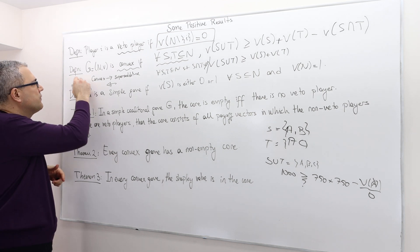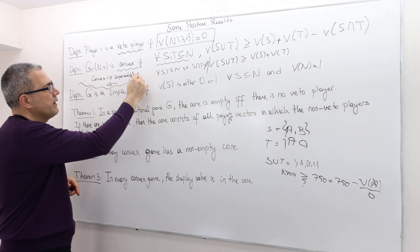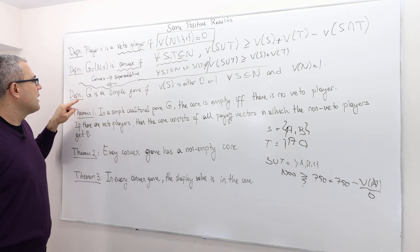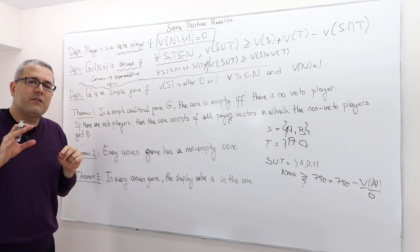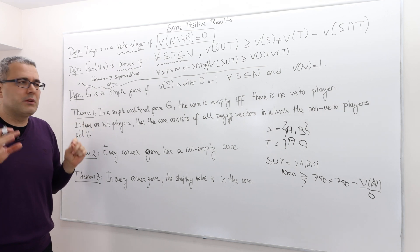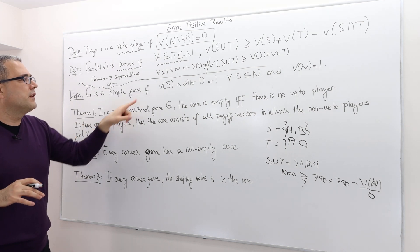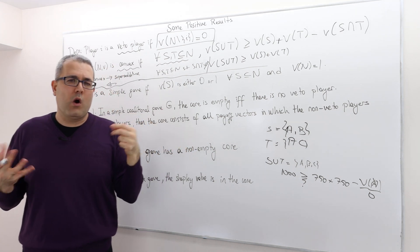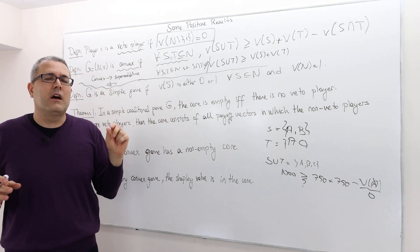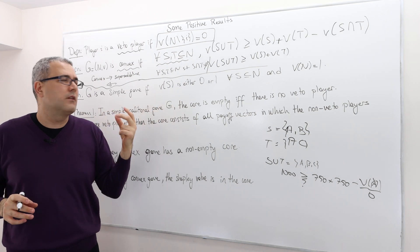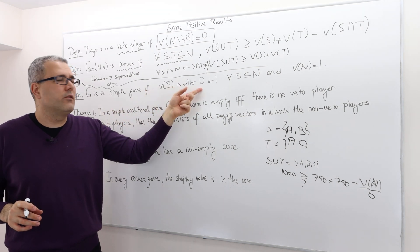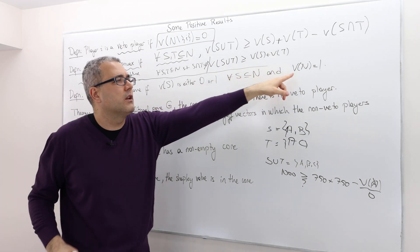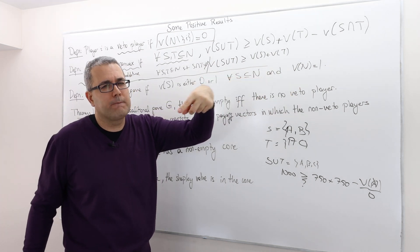All right, the third and the last definition. We classify some games as simple games if the worth function takes the value 0 or 1. Okay? So it's very binary. For any coalition, the worth function takes the value 0 or 1. And for the grand coalition, it takes the value 1. Okay?